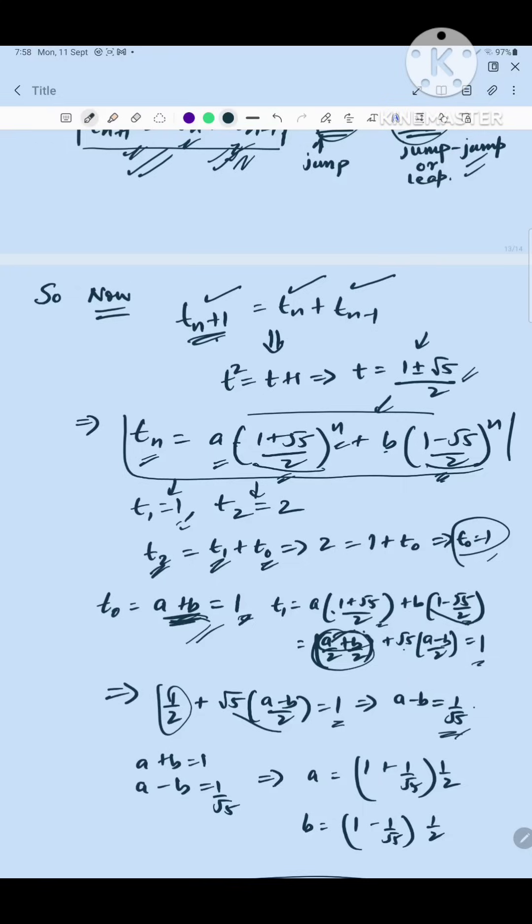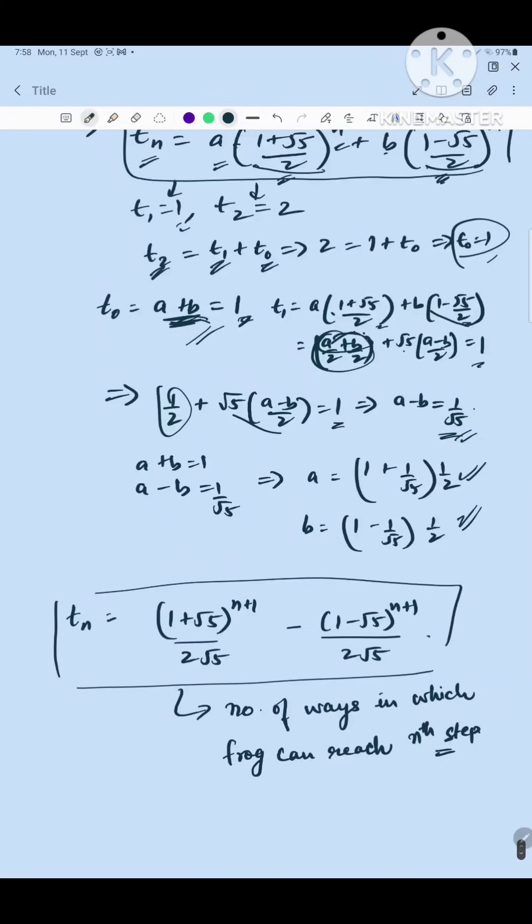So we have a plus b, we have a minus b, we got a and b. And by this we get the nth term t_n. So t_n is this, so this is the number of ways of landing on the nth step. So if I will put n is equal to 100, I will get [(1 + √5)^101] / [2√5] minus [(1 - √5)^101] / [2√5].